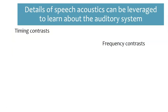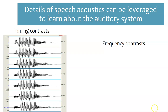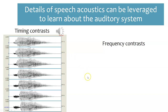The details of speech acoustics can be used to learn more about the auditory system. Our ears pay attention to timing contrast and frequency contrast. The difference between 'deer' and 'tear' is only a very slight difference in timing — a very short initial segment for 'deer' and a slightly longer initial segment for 'tear'. By playing sounds that gradually change between these and seeing how we hear them — deer, deer, deer — we can learn how the auditory system handles very slight changes in timing.